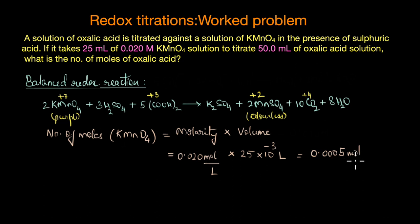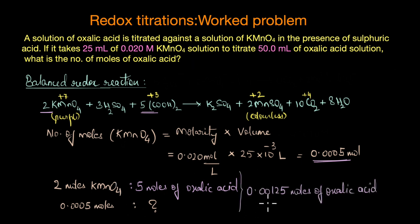The next step is to look at the stoichiometric ratio in which the reaction takes place. As you can see, 5 moles of oxalic acid reacts with 2 moles of potassium permanganate, so the ratio is 2:5. If 5 moles of oxalic acid reacts with 2 moles of potassium permanganate, how many moles of oxalic acid would react with 0.0005 moles of KMnO4 solution? This is a simple calculation and you get the final answer as 0.00125 moles of oxalic acid.